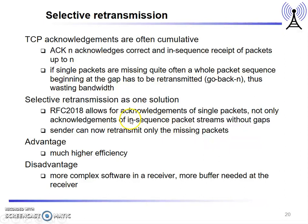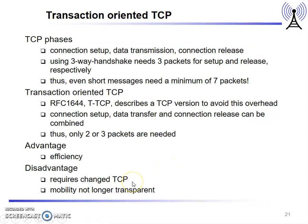To overcome this, selective retransmission allows only the lost packets to be retransmitted. The sender retransmits only the missing packets. The advantage is much higher efficiency compared to other protocols. The disadvantages are that it requires more complex software at the receiver and more buffer space at the receiver.